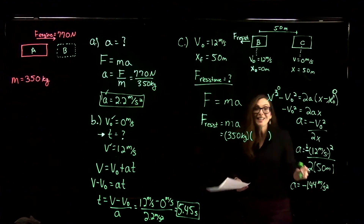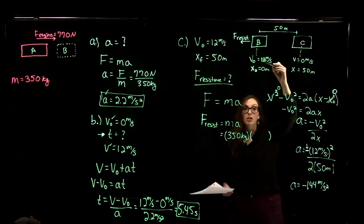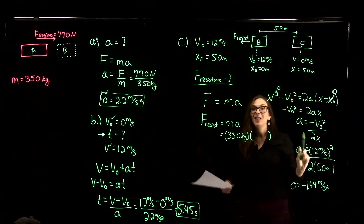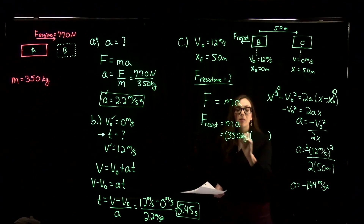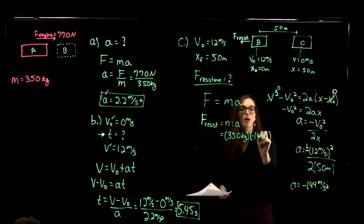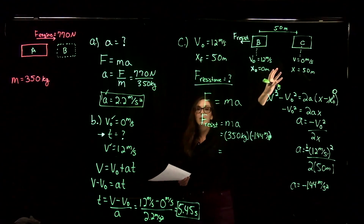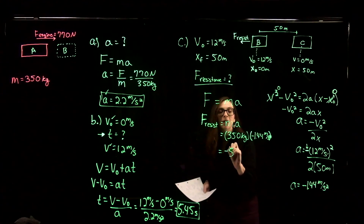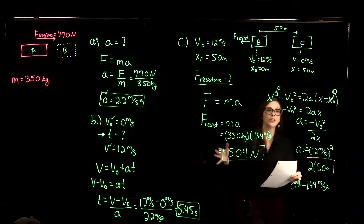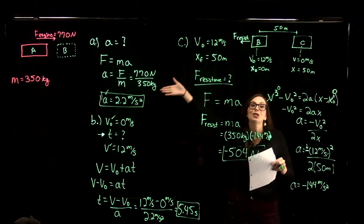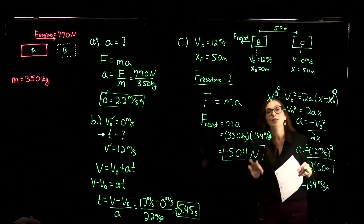We take that acceleration and plug it into F = ma. The resistance force equals 350 kg times -1.44 m/s², giving a resistance force of -504 Newtons. It's negative because that tells us the direction of the force — it acts opposite the direction of motion. If the boat is moving forward, that force acts backward in order to bring the boat to a stop.